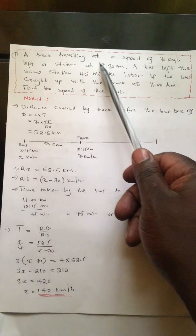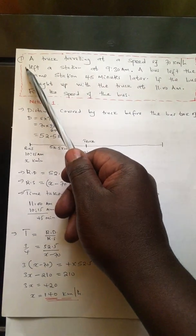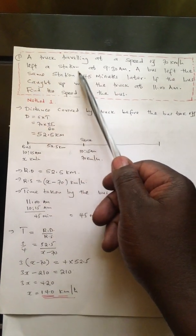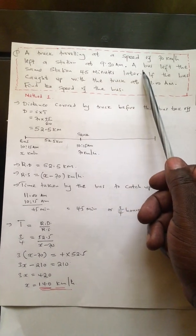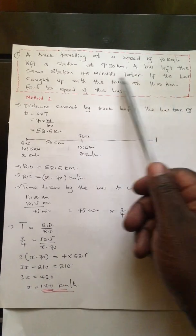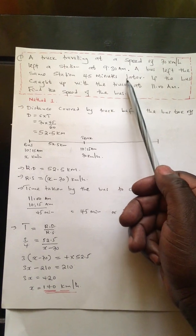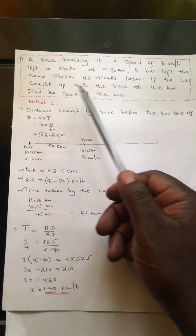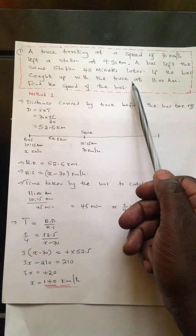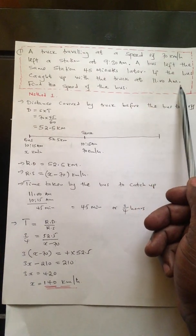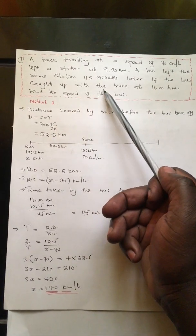A truck travelling at a speed of 70 km per hour left a station at 9:30 am. A bus left the same station 45 minutes later. If the bus caught up with the truck at 11 am, find the speed of the bus.